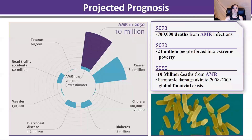By the year 2050, the World Health Organization predicts that over 10 million people will die annually due to antimicrobial resistant or antibiotic resistant bacterial infections. Currently, we're using antibiotics to treat these. However, they're increasingly becoming more and more ineffective as they're generally over-prescribed and bacteria are becoming resistant.